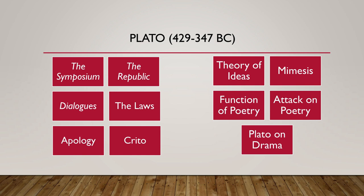Plato's general ideas about literature mainly center around his theory of ideas, mimesis, function of poetry, Plato's attack on poetry, and Plato's views on drama. These concepts we find in his seminal work The Republic, along with other works like Symposium, Dialogue, The Laws, Apology — these are the major works of Plato.